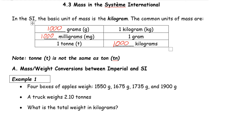I have a note here: a tonne — spelled T-O-N-N-E — is not the same as the ton we studied before. This tonne is what we call a metric ton. The ton we studied previously, where there are 2,000 pounds in a ton, is your imperial ton — that's what Americans use.